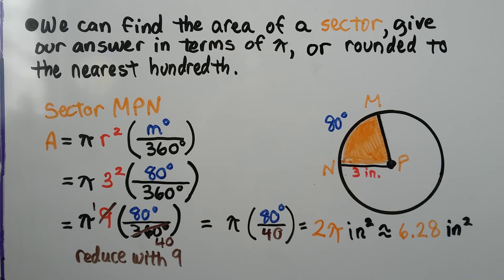We can find the area of a sector, give our answer in terms of pi, or our answer could be rounded to the nearest hundredth. So here we have Sector MPN.